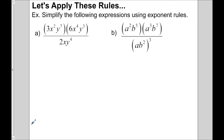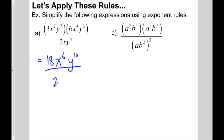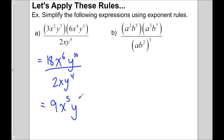Let's apply these rules to more complex expressions. For part a, we've got two monomials multiplying. We handle each separately: 3 × 6 = 18; x² × x⁴ = x⁶ (adding exponents); y⁷ × y³ = y¹⁰. Then dividing by 2xy⁴ in the denominator: 18 ÷ 2 = 9; x⁶ ÷ x = x⁵ (subtracting exponents); y¹⁰ ÷ y⁴ = y⁶.